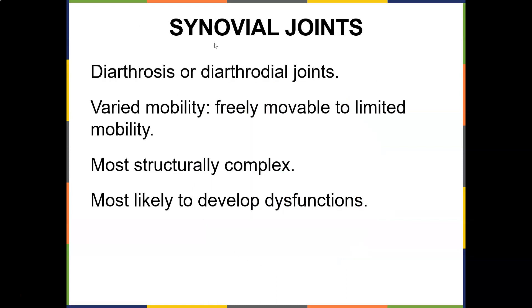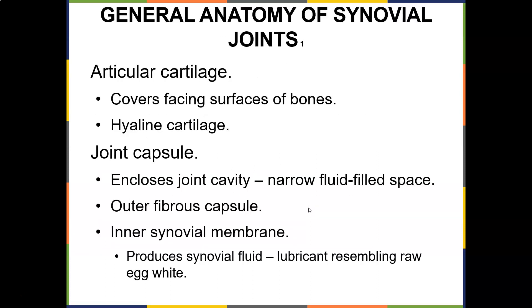The ones we talk about most in sports or injuries are synovial joints, also called diarthrosis or diarthrodial joints. They have varied mobility — from freely movable to limited mobility. They're the most structurally complex and, unfortunately, the most likely to develop dysfunctions. Articular cartilage covers the facing surfaces of the bones and is mostly hyaline cartilage.